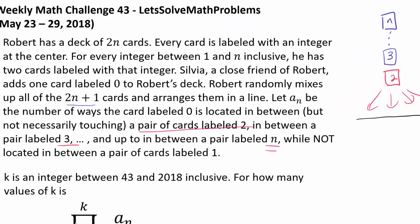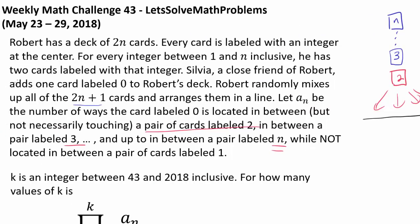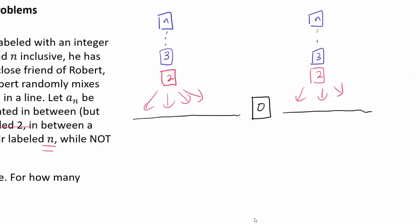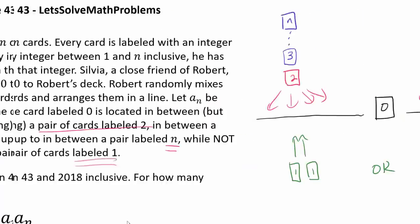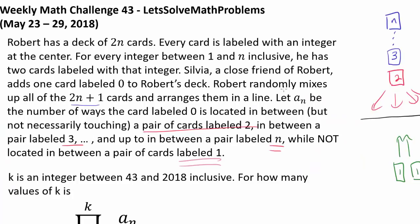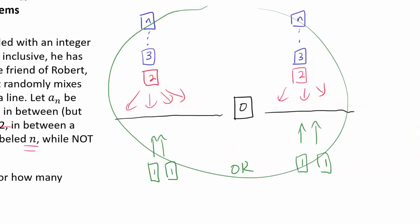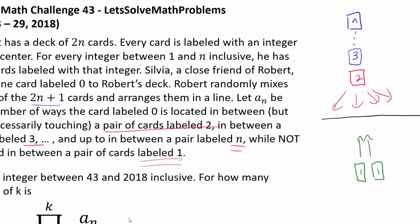We also know 0 cannot be located in between a pair of cards labeled 1. That tells us both of the cards labeled 1 either both go to the left side or both go to the right side of 0. And a_n is the number of ways this particular situation can happen.